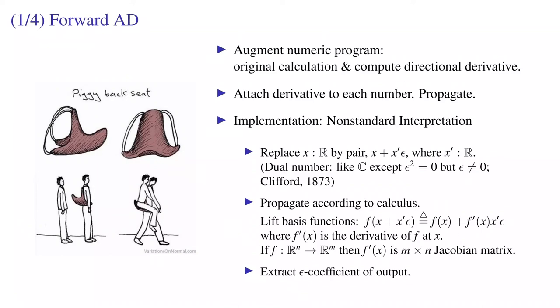This is like a dual number. Like a complex number inside the computer it's represented as a two-element pair. These are propagated according to the rules of calculus and we have an operator for extracting the epsilon coefficient, the tangent of an output.